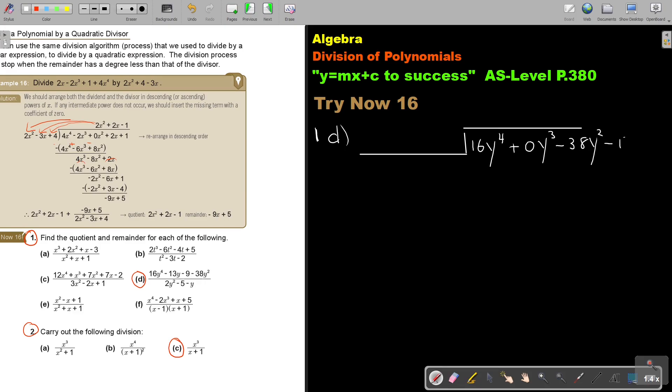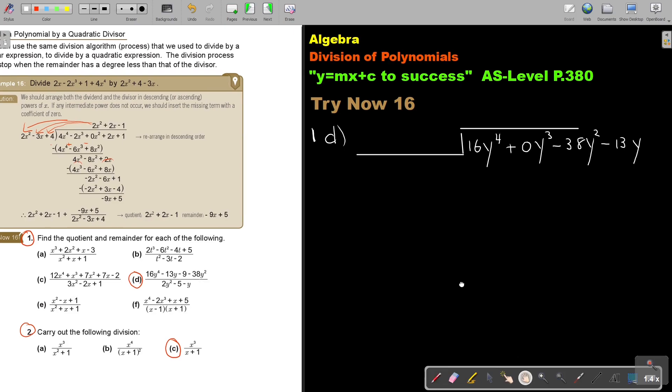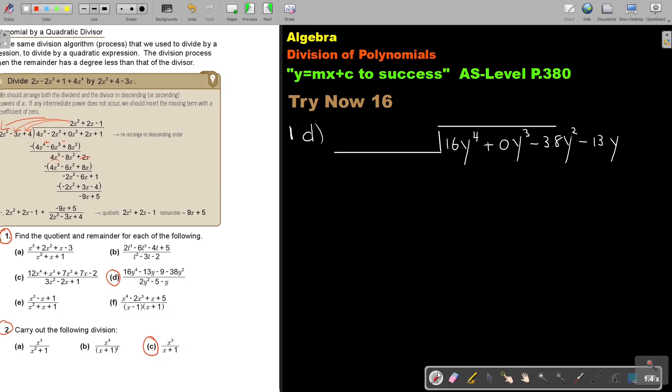And I still have to move it a little bit. 30y, minus 9. And then I'm going to arrange this one also. So it's 2y square. Always grab your sign in front, minus y, minus 5. And now I start. I take this and I divide it by this. So 16 divided by 2. So that will be 8y square.